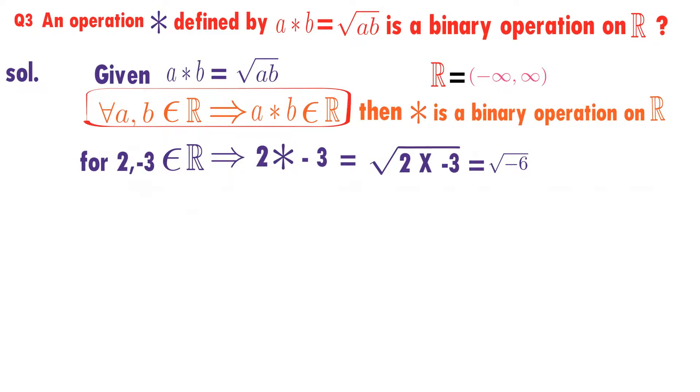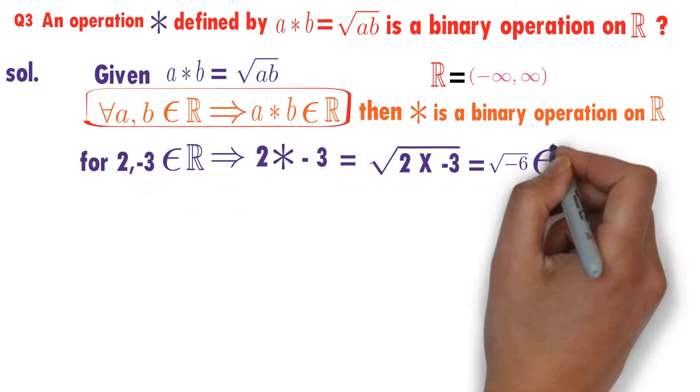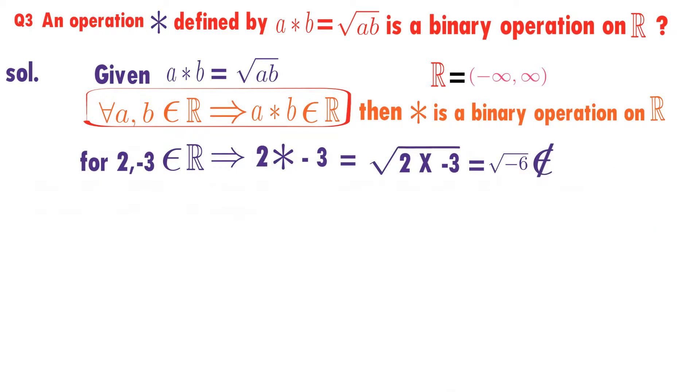Root over minus 6 is a real number? No. Clearly it is an imaginary number because under root negative number is there, so root over minus 6 is not a real number. Therefore,